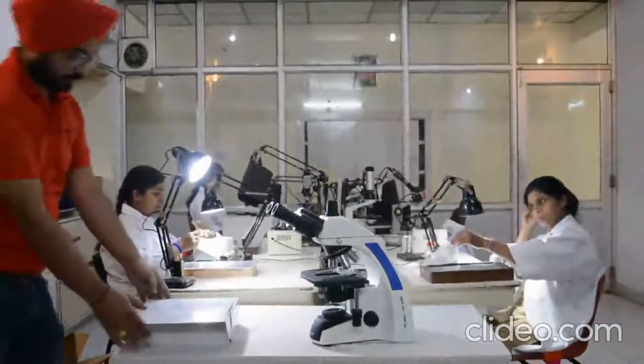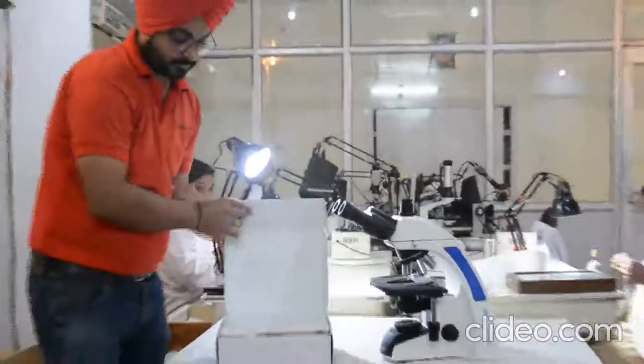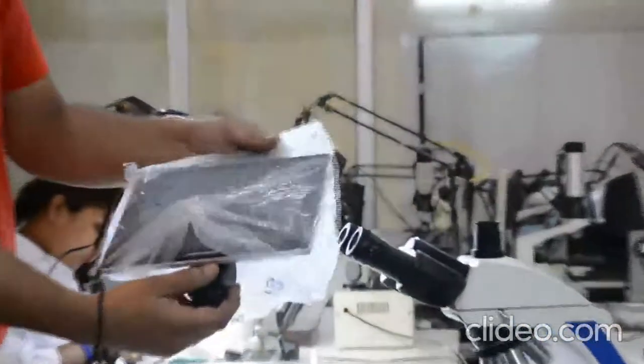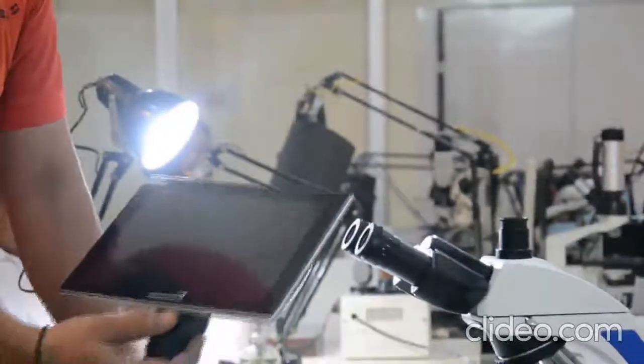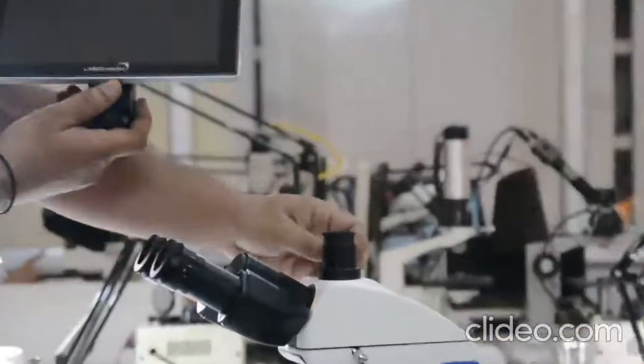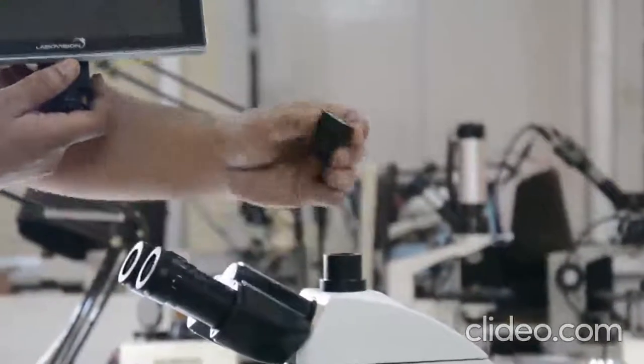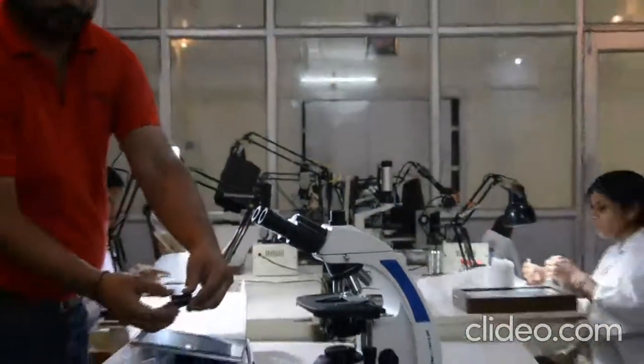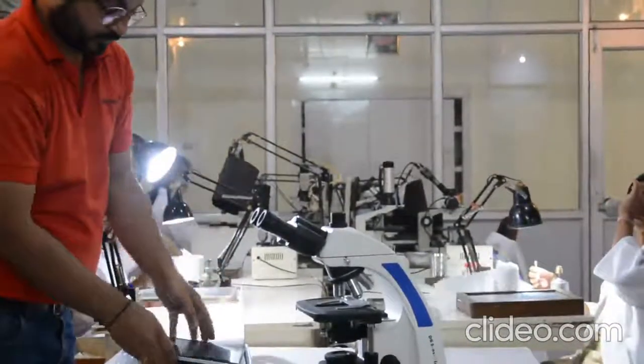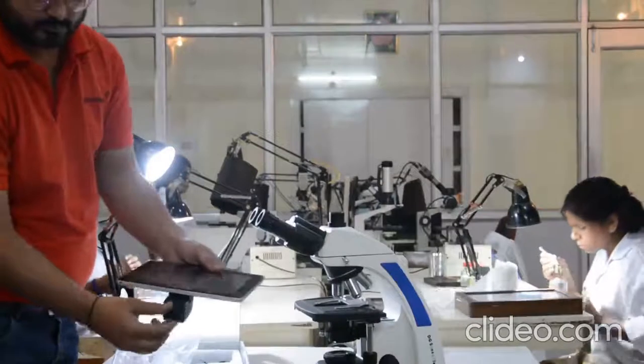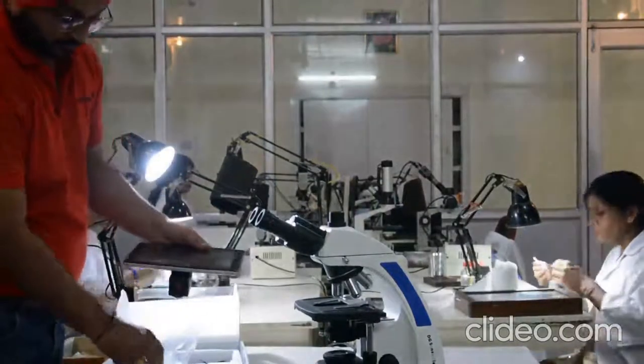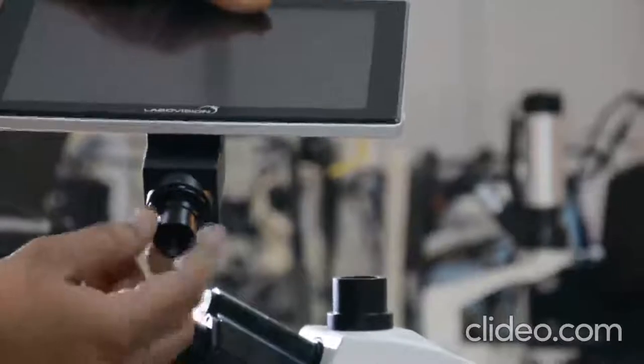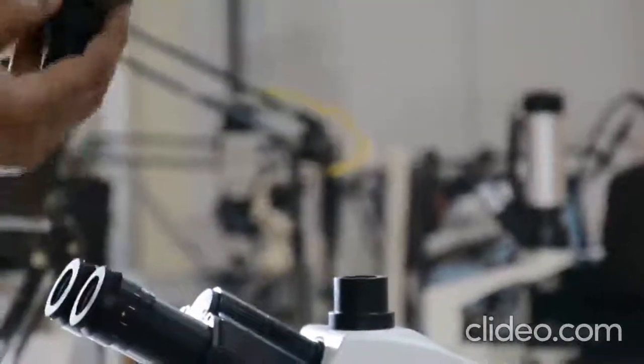Now we will unbox the LCD screen. We will place it on the trinocular port which is there on the head. Then you have to remove the cover. Remove the bottom cover of the LCD screen. Put back the attachment. Screw the attachment so that it fixes on the trinocular port.